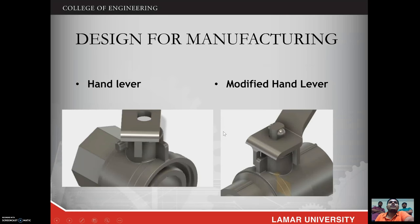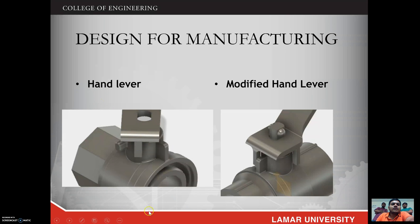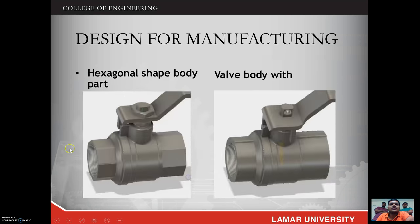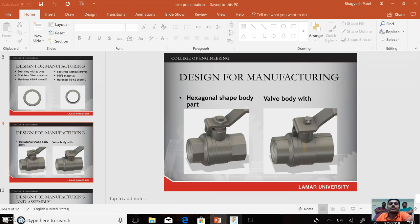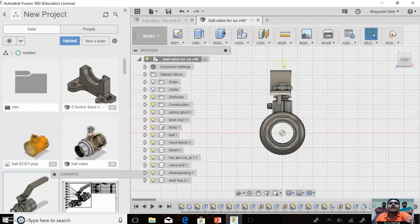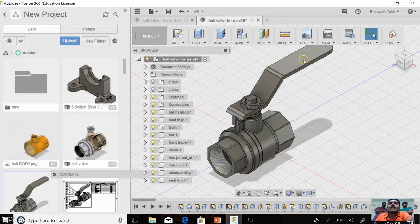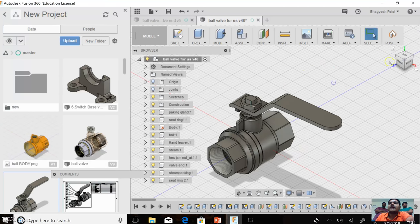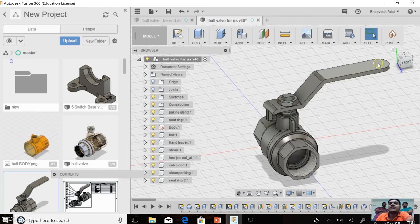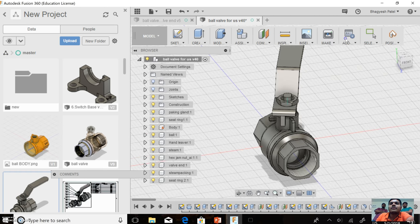Now it's time for Design for Manufacturing. We made some DFM changes for less manufacturing time and cost, and for easier manufacturing. One change is to the hand lever — let me show this in Autodesk Fusion 360. Here is the closed position of the valve.